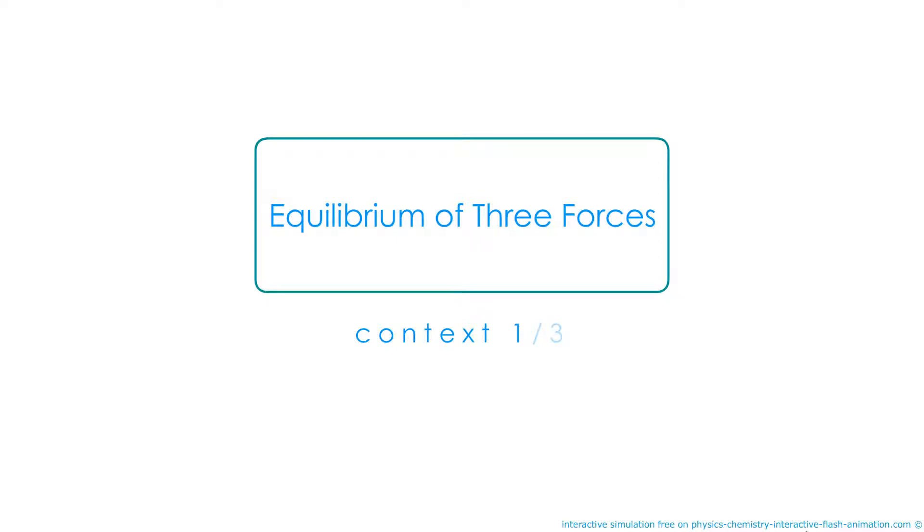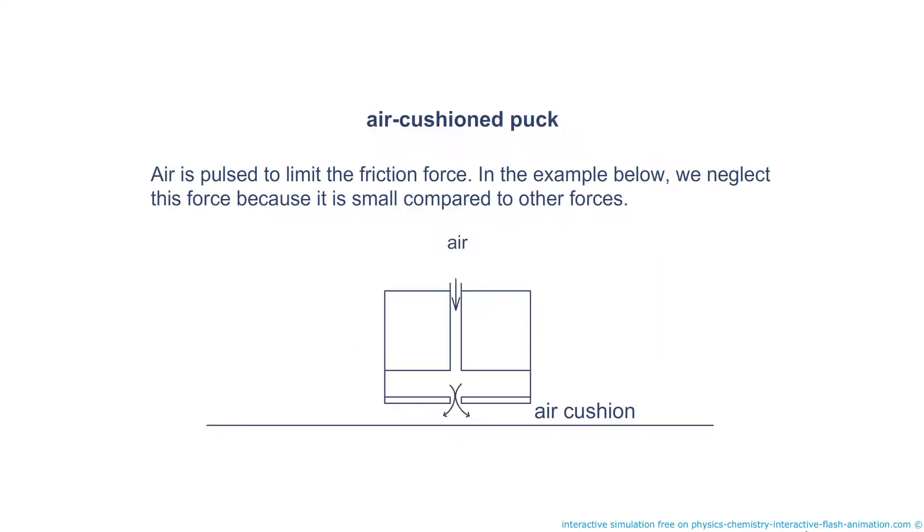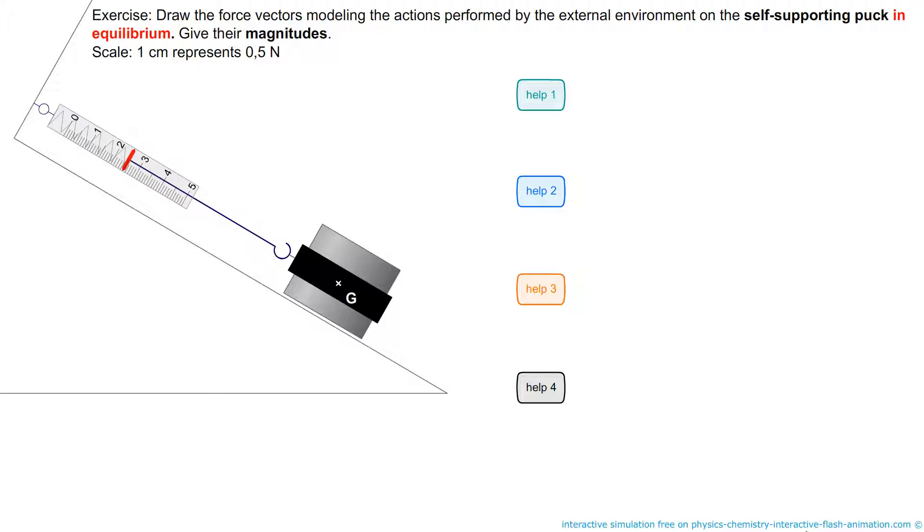Hello, welcome to PCCL. We will see three situations in which a solid body is submitted to three forces. The first solid is an air cushion puck. It is used when you want to get rid of friction. Draw the vectors modeling the forces exerted on this object. We have little information apparently to be able to answer this question. Yet we have plenty of clues.